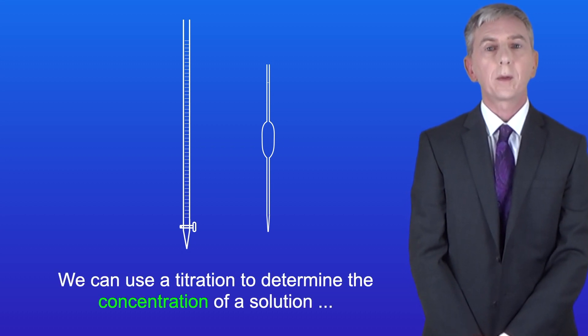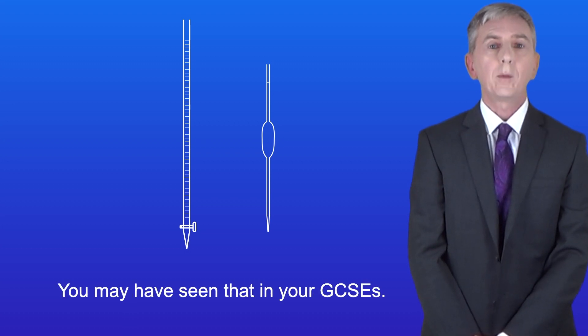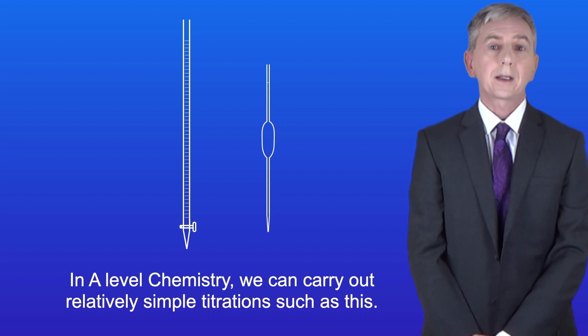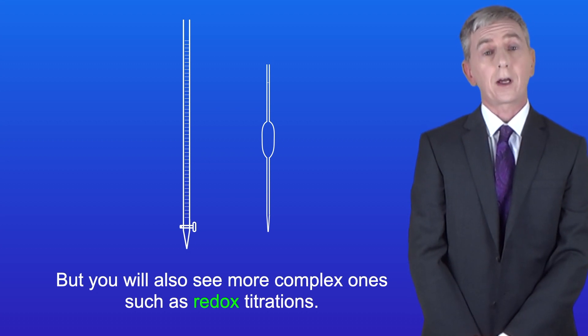Now titrations are really important in chemistry. We can use a titration to determine the concentration of a solution, for example an acid or an alkali, and you may have seen that in your GCSEs. In A-level chemistry we can carry out relatively simple titrations such as this, but you'll also see more complex ones such as redox titrations.